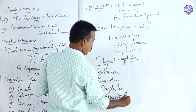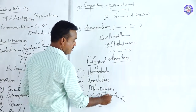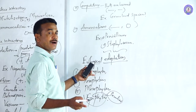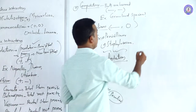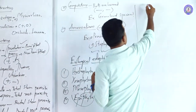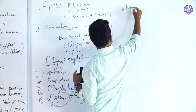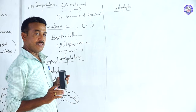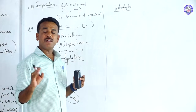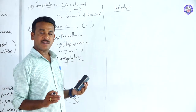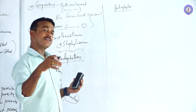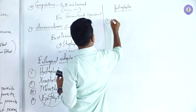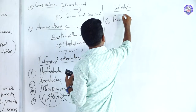Epiphytes are peculiar because they are not in contact with the soil — they are always present on the body and branches of trees. The first type is hydrophytes. Hydrophytes are plants that live in water. Based on structural phenomena, hydrophytes can be classified into various types. The first is free-floating hydrophytes.